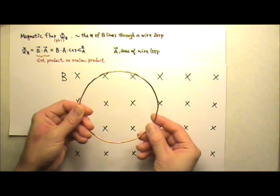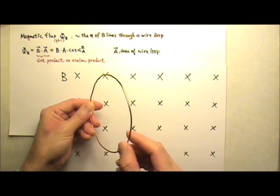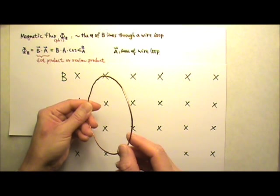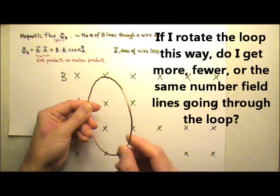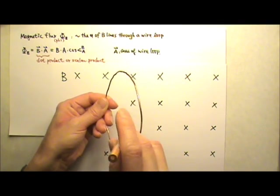The angle matters too. If I rotate the loop this way, do I get more, fewer, or the same number of field lines going through the loop? I would get fewer lines through the loop than before.